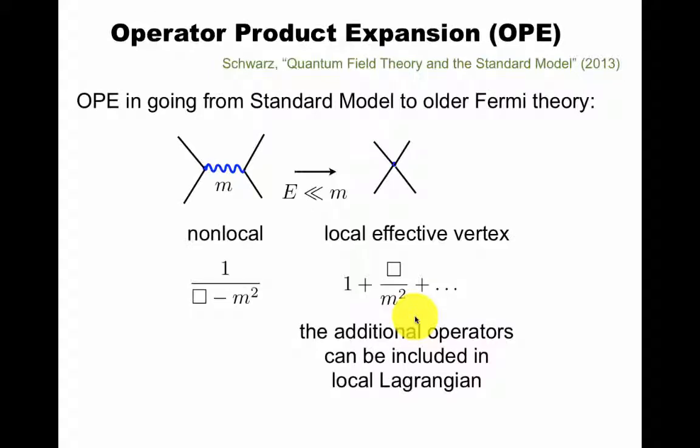Operator product expansion is not special to conformal field theory. It is of interest in quantum field theory in general. For example, in Schwartz's quantum field theory book, he has a very nice explanation of the OPE in going from the standard model to the older Fermi theory. Meaning if you have exchange between fermions of a, let's say, W boson with mass M, the propagator is non-local. Meaning you couldn't really think of this as an operator in your Lagrangian. If you expand it for low enough energy, you get a local effective vertex, meaning the expansion of this is that. And these operators, like this box here, can be included in a local Lagrangian. So this is the connection between the OPE and writing a local Lagrangian effective field theory.